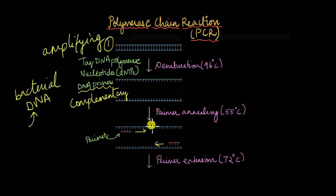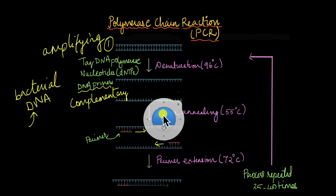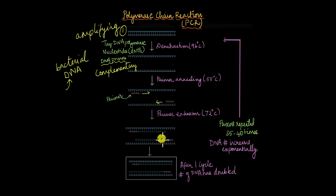After the primer anneals to both strands, the next step is extension. The primers are extended on both strands, and after one cycle, we get two DNA molecules from one, meaning the DNA has exponentially increased. We repeat this 35 to 40 times so the DNA quantity increases exponentially. This is especially useful when we suspect disease but it's not showing up on regular tests. We can amplify the DNA sample to get the results we want.